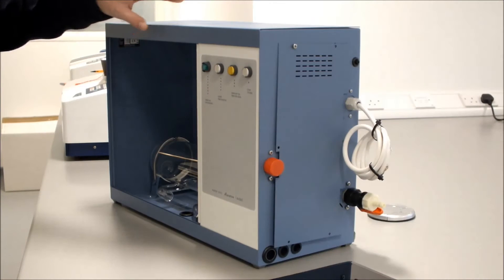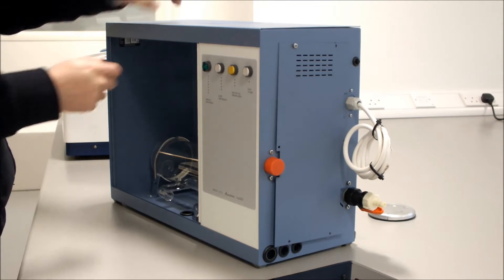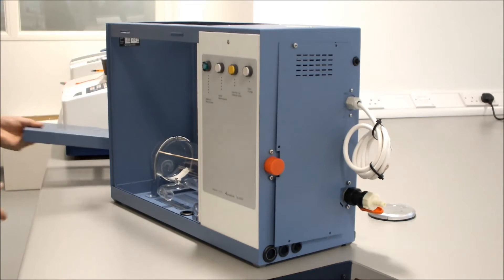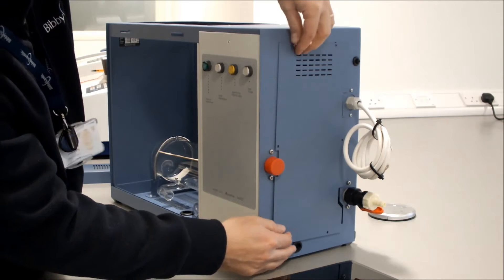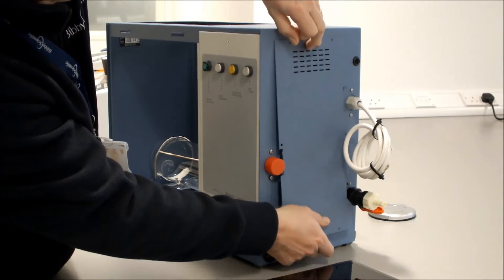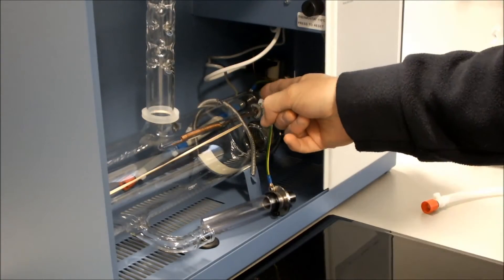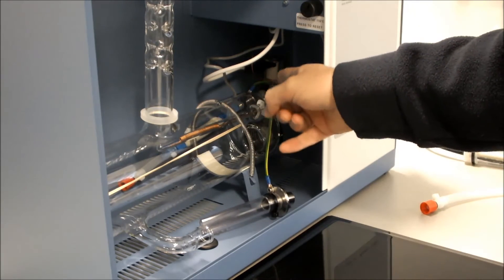The next thing to do is to remove the lid which consists of six countersunk screws. When they are removed the lid just is removed. And there are six screws for the side panel. Again these are removed and the side panel can be removed. We have also got the thermostat glass tube which runs inside the boiler.